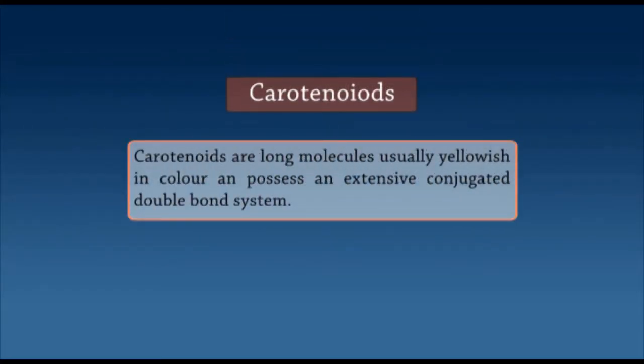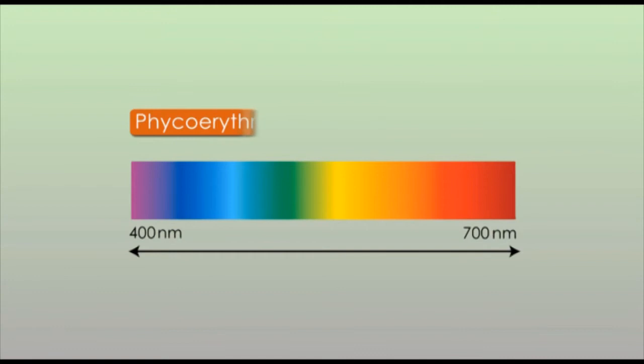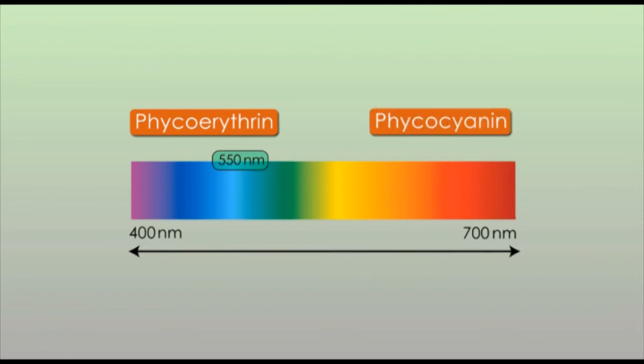Carotenoids are long molecules, usually yellowish in colour, and possess an extensive conjugated double bond system. Certain red algae and cyanobacteria possess another photosynthetic pigment known as phycobiliproteins — phycoerythrin and phycocyanin — which consist of a protein with a tetrapyrrole attached. Phycoerythrin is a red pigment with maximum absorption at around 550 nm, while phycocyanin is blue with maximum absorption at around 620 to 640 nm. These phycobiliproteins along with the chlorophylls are called the accessory pigments. Chlorophylls cannot absorb light energy effectively in the blue-green through yellow range, but accessory pigments absorb light in this region and transfer the trapped energy to chlorophyll, making photosynthesis more efficient over a broader range.